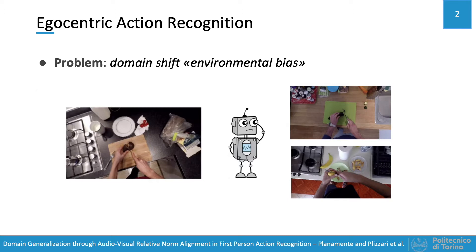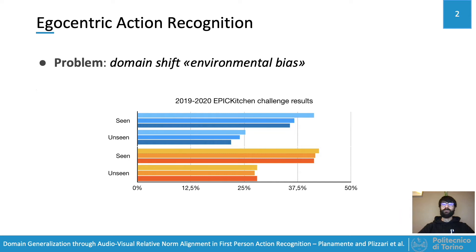To better understand the importance of this problem, we show the performance of the top 3 ranked models at the past Epic Kitchen Challenge. We can notice a consistent drop in performance when we pass from seen to unseen scenarios.